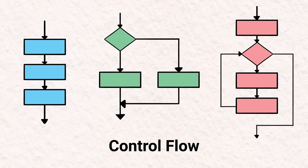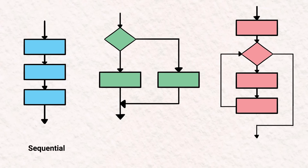Starting at number one, we have Whenever. In programming, control flow is the order in which function calls, instructions, and statements are executed when a program is running. There are three basic types of control flow: sequential flow, conditional flow, and repetitive flow.